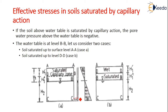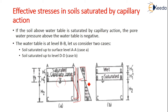What is the effective stress in soils saturated by capillary action? If the soil above the water table is saturated by capillary action, the pore water pressure above the water table is always negative. Below the water table it is positive.